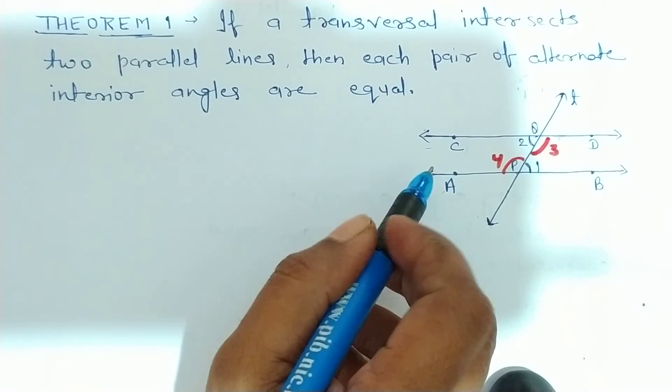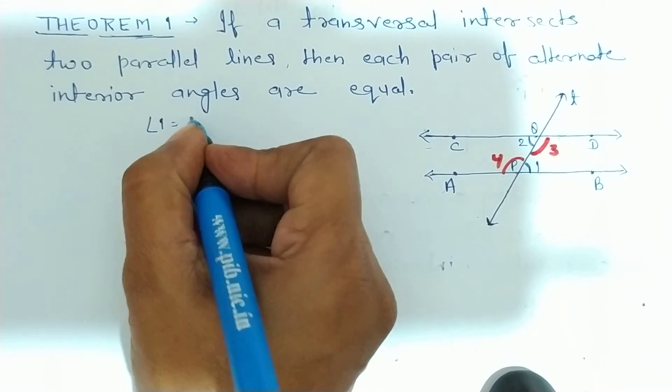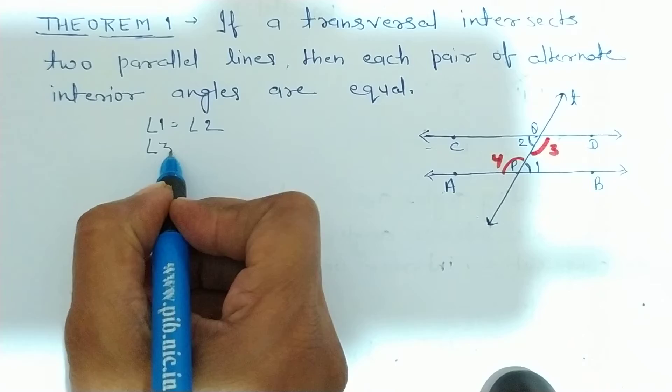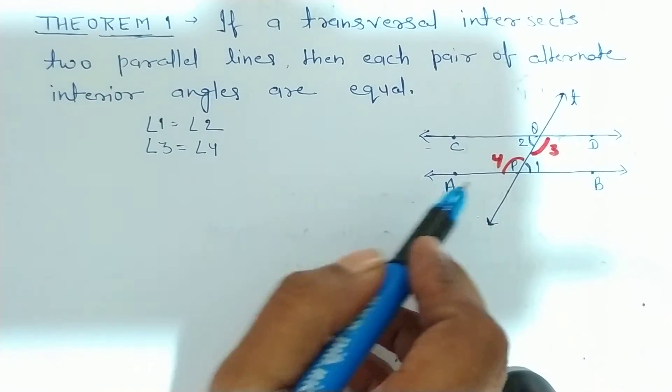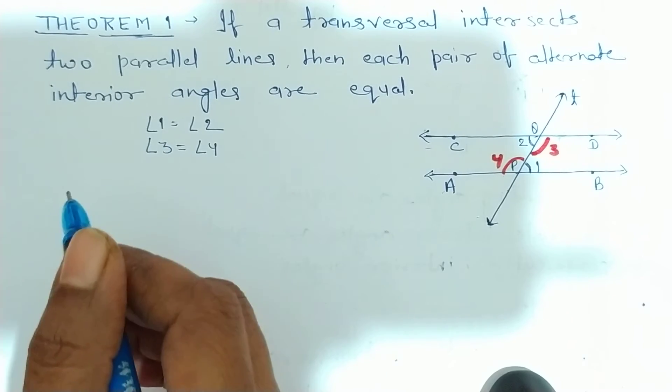Now, we have to prove that angle 1 equal to angle 2 and angle 3 equal to angle 4. Clear? Now, start with proof.